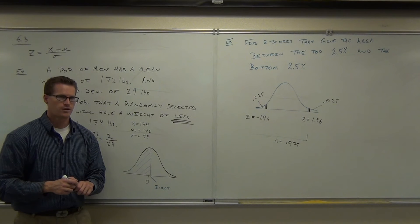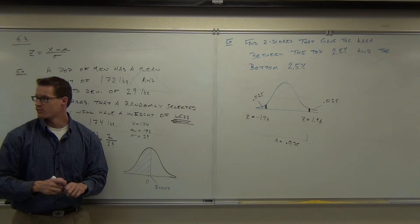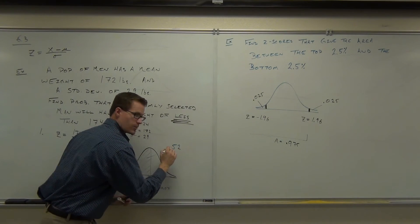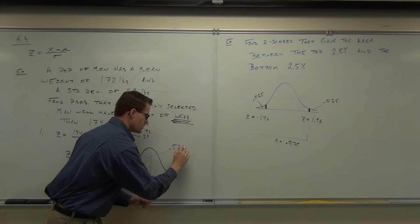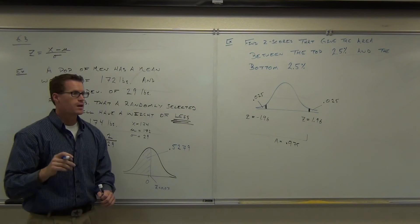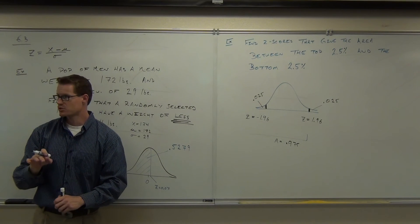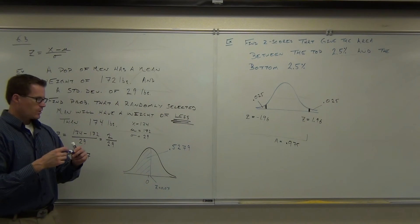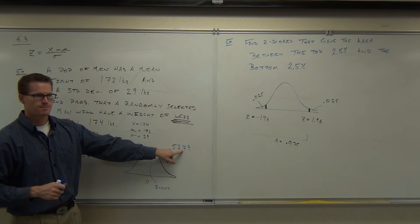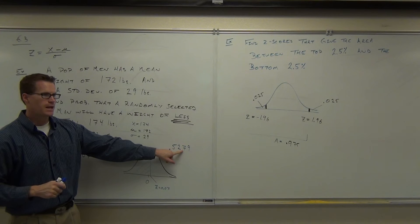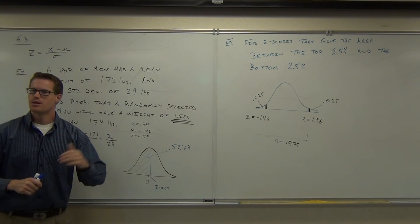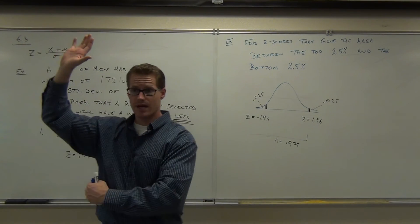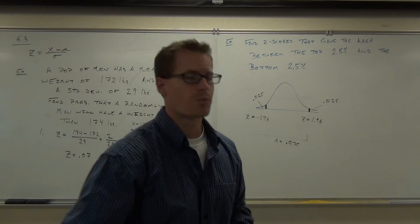That should be greater than 0.5. On the table it says 0.5279. Your calculator will give you something a little bit different because it will be exactly accurate up to four decimal places. What's it mean? This interpretation would be there's a 52.8% chance that you're going to randomly select a man and he will have a weight of less than 174 pounds. How many of you feel okay with what we talked about so far? Z-score, draw a picture, look it up. We'll practice more next time.